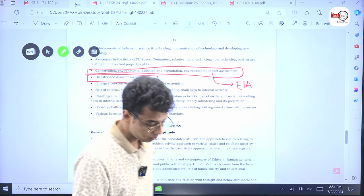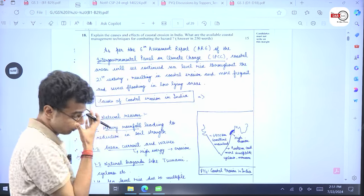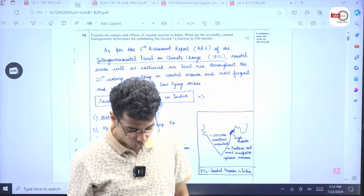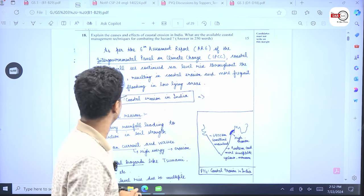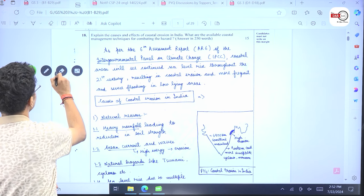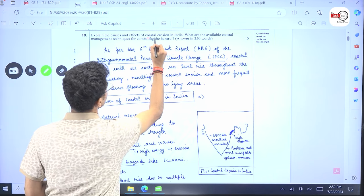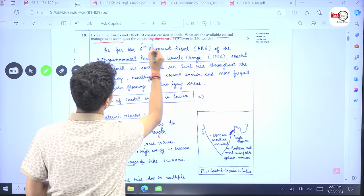First, we'll be covering the theme of environment. Question number one, explain the causes and effects of coastal erosion in India. What are the available coastal management techniques for combating the hazard? So it is asking about coastal erosion.